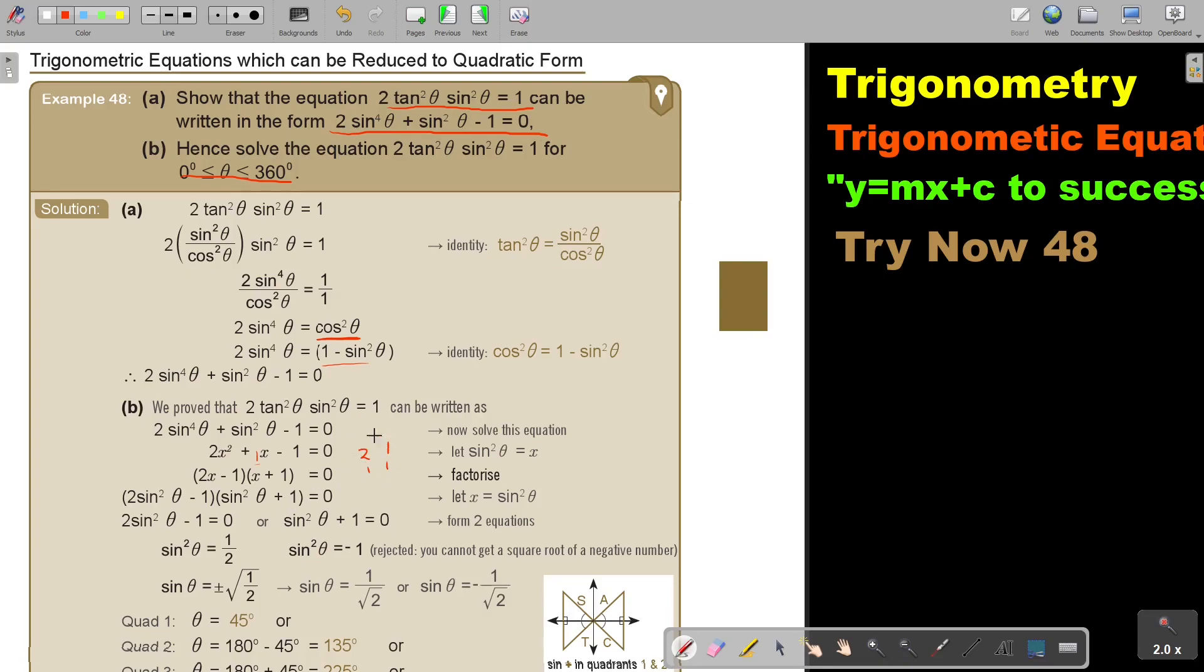And then the biggest overcross gets a positive, and this one gets a negative. So it's 2x minus 1, x plus 1. And now I replace, put back in the place of x, sin squared theta. So I did that. Then I put this one equals 0 and this one also equals 0. So let's start with the first one.